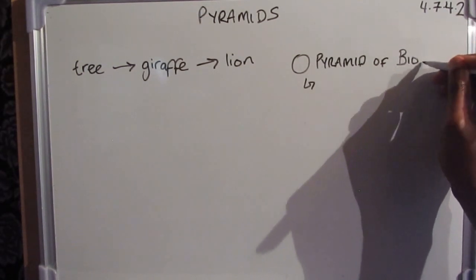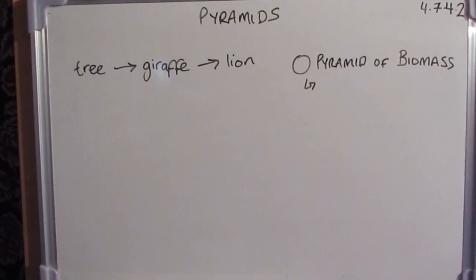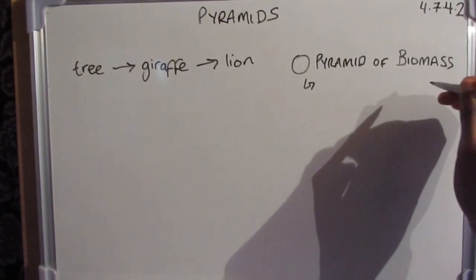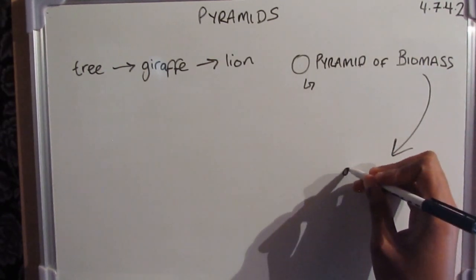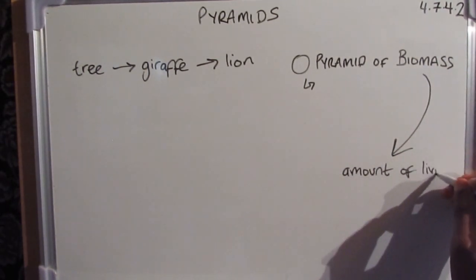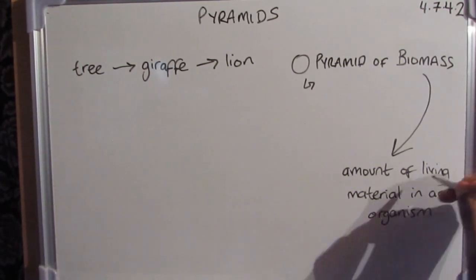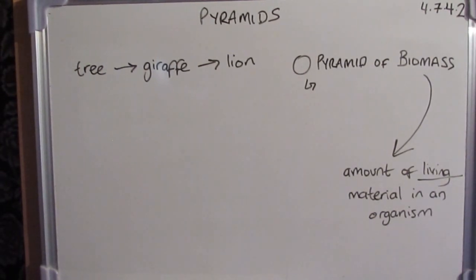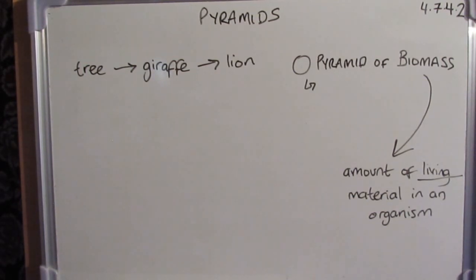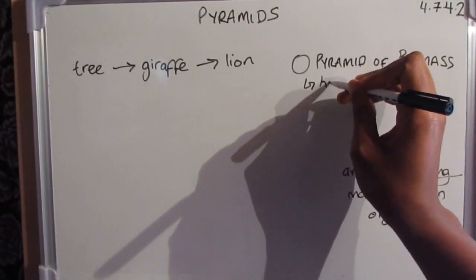Another way to use pyramids is the pyramid of biomass. Biomass is defined as the amount of living material in an organism. This living material includes carbon — which in humans and other organisms is present in high abundance — found in our skin, in the tissues that make up our muscles. We get that carbon from the food we eat, with the main carbon source for energy being glucose.